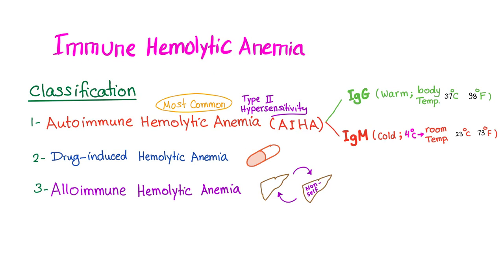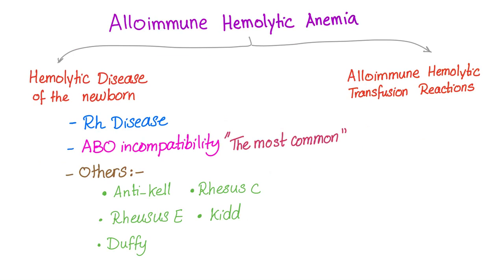As you know, immune hemolytic anemia has three different subtypes. Autoimmune hemolytic anemia, the most common, with warm and cold subtypes. Of the warm subtype, please don't forget lupus and CLL. Second, drug-induced hemolytic anemia. And third, alloimmune hemolytic anemia, which is our topic now.